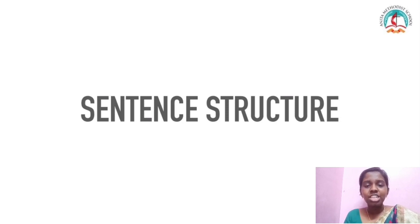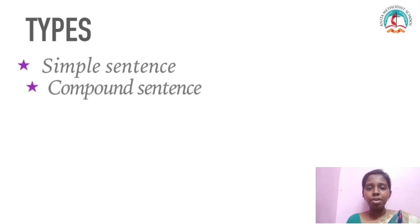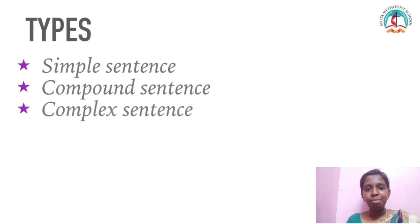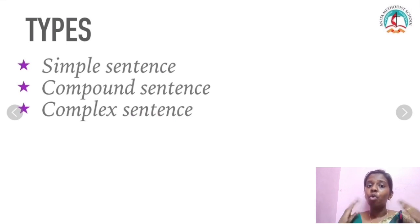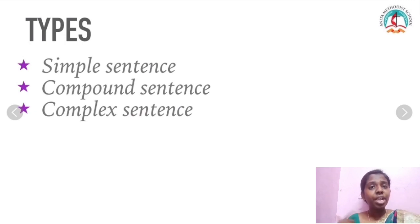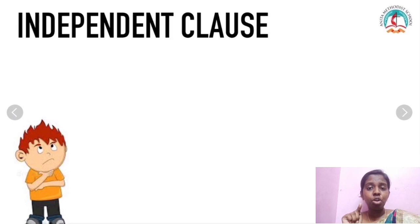Today we are going to see about sentence structure. When I say sentence structure, there should be types. There are three types: simple sentence, compound sentence, and complex sentence. You would have already known about this, so we are just going to have a quick recap. Before going into the types, I'll just remind you of what we learned in the previous lesson, as it is important for this lesson too.